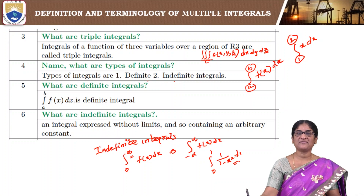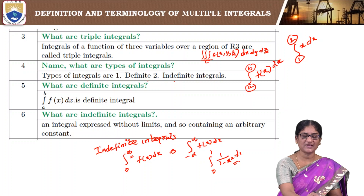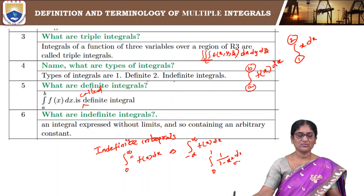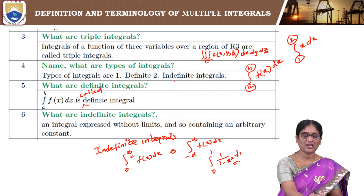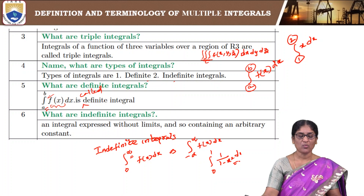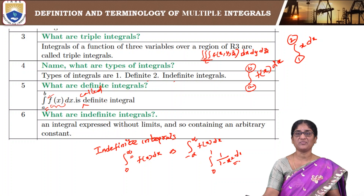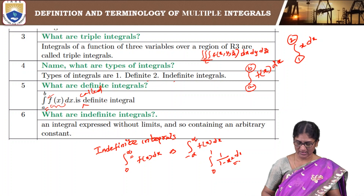The integral from a to b of f(x) dx is called a definite integral. After integrating f(x), the values of x — upper limit b and lower limit a — have to be substituted. An integral expressed without limits, or containing an arbitrary constant, is called an indefinite integral.